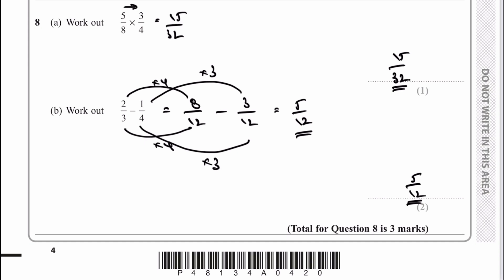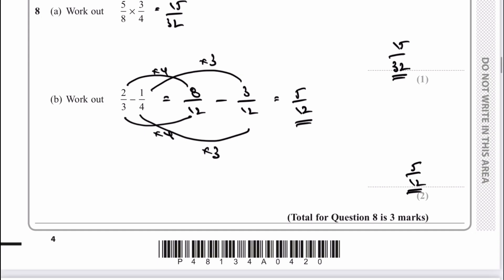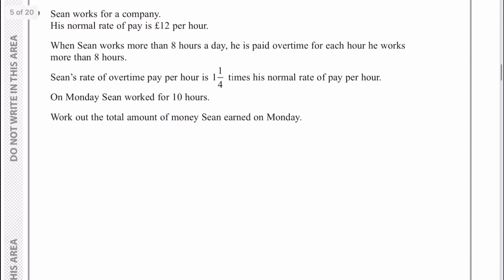Let's move on then to question number 9 — I'm going to aim for about 20 minutes on this particular video, giving you hopefully about an hour's worth of fairly focused revision. Sean works for a company. His normal rate of pay is £12 per hour. When Sean works for more than eight hours a day, he's paid overtime. On Monday, Sean worked for 10 hours.